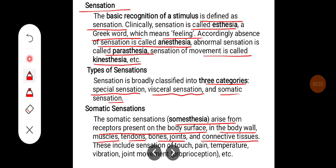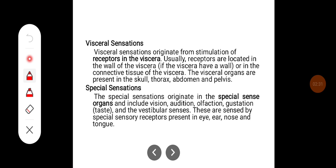Somatic sensations include touch, pain, temperature, vibration, joint movement, and proprioception. Visceral sensation originates from stimulation of receptors in the viscera. Usually, receptors are located in the wall of viscera or in the connective tissue of the viscera. The visceral organs are present in the skull, thorax, abdomen, and pelvis.